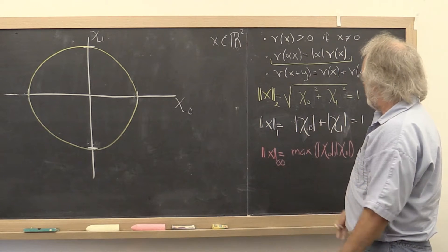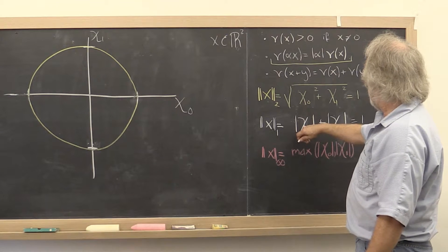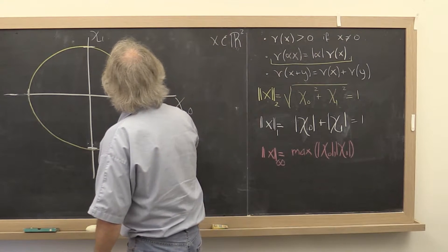What are some points that are obviously on this set? Well, if chi0 is equal to 1, then chi1 has to be 0. So this point has to be on there.